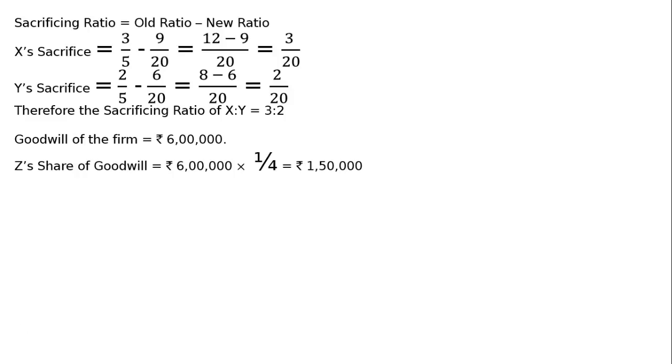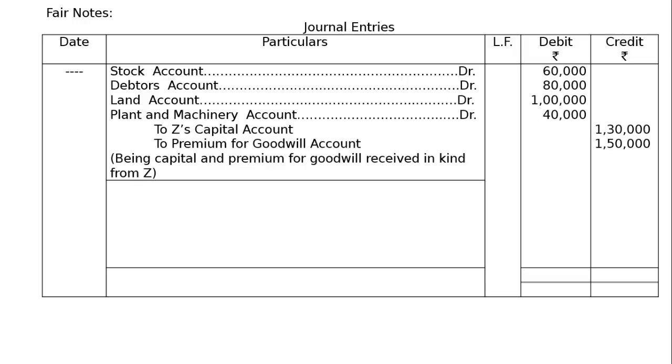Fair notes: the format of journal entries. The first entry: Stock Account debited 60,000, Debtors Account debited 80,000, Land Account debited 1,00,000, Plant and Machinery Account debited 40,000, To Z's Capital Account rupees 1,30,000, To Premium for Goodwill Account rupees 1,50,000, being capital and premium for goodwill received in kind from Z.